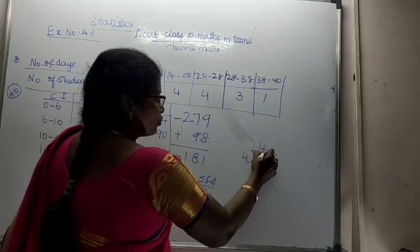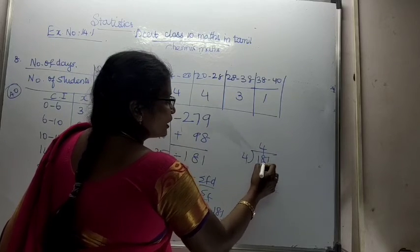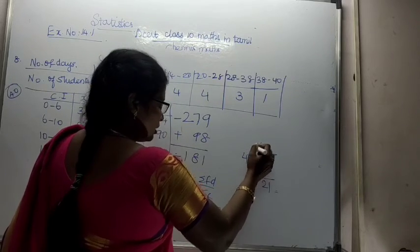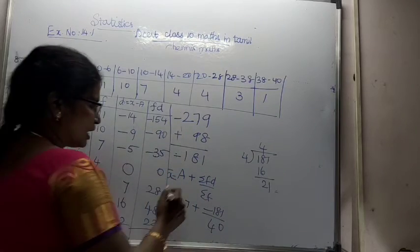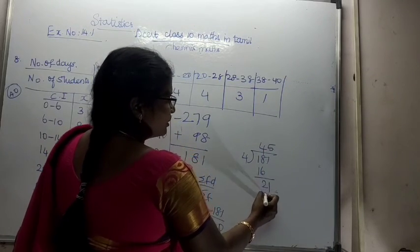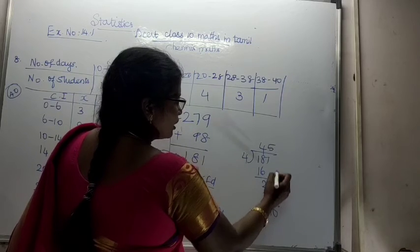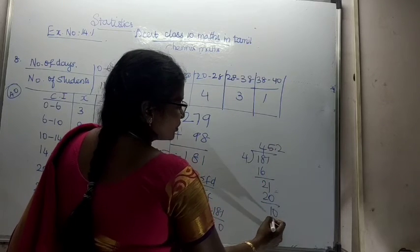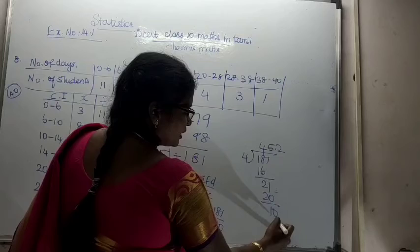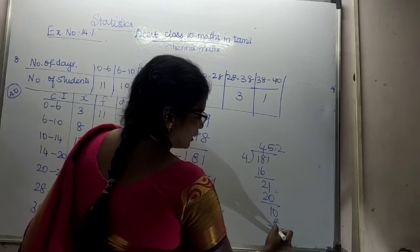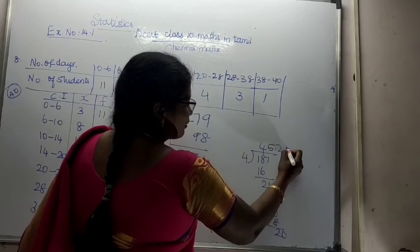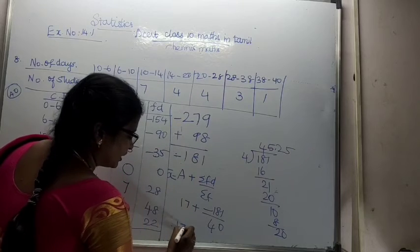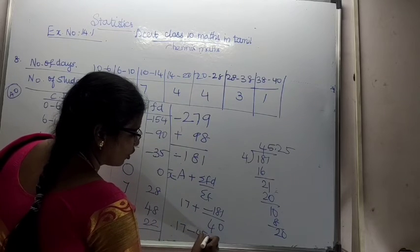Dividing 181 by 40: 4 times 40 is 160, remainder is 21. So we get 4 point something. Adding decimal: 210 divided by 40 gives 5.25. Therefore, minus 181 divided by 40 equals minus 4.525.